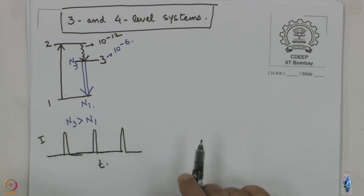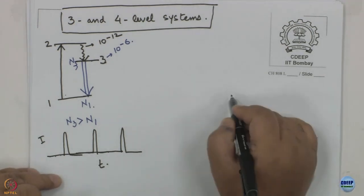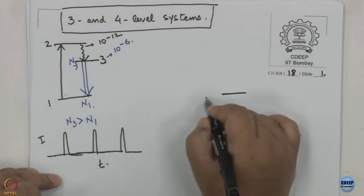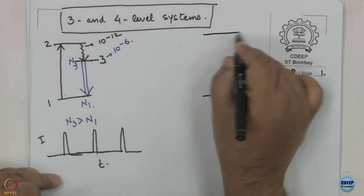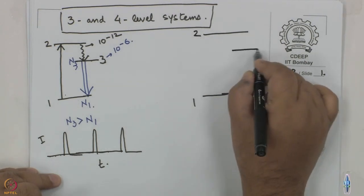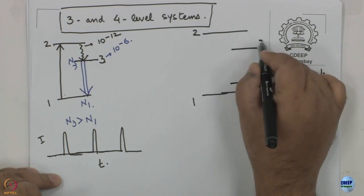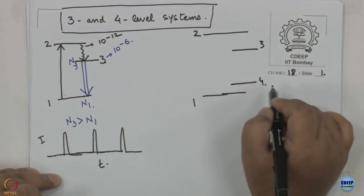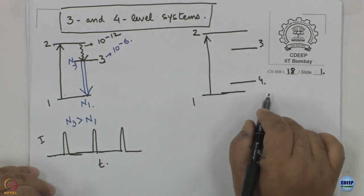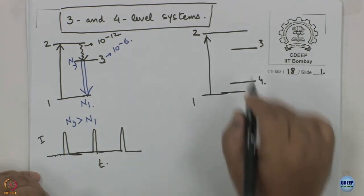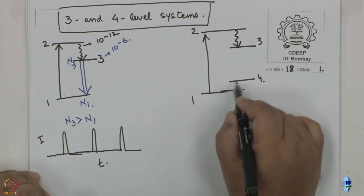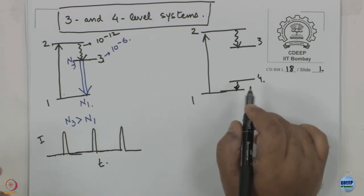Now let us talk about the four-level system. Suppose I have levels 1, 2, 3, and 4. The situation is: a direct transition is possible between 1 and 2; from 2 to 3, there is an efficient non-radiative pathway; and from 4 to 1, there is also an efficient non-radiative pathway.